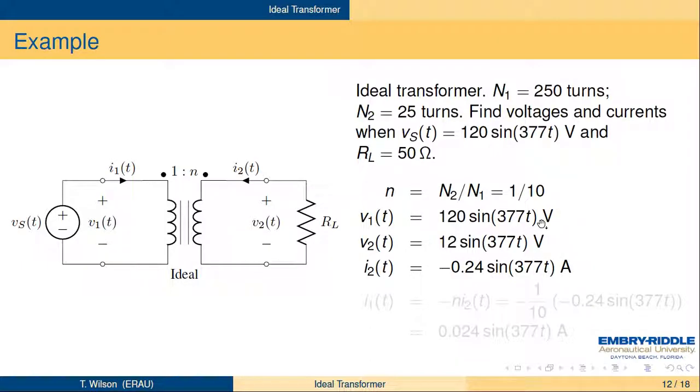Here's the rest of that example. We found previously that I2 was minus 0.24 amps. So now when we do minus N times I2, so that means that I2 is actually 0.24 amps into the resistor. We do minus N times I2, and we get one-tenth of minus 0.24, and we get 0.024 amps, the I1 going into the transformer.